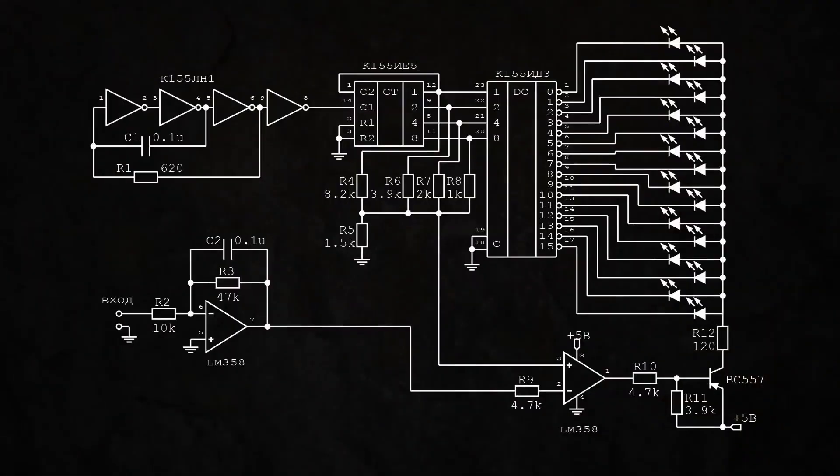To adjust the input voltage to the required levels, we will use the second operational amplifier, which we still have in the LM358 package, and assemble an inverting amplifier circuit on it. I also decided to add a small capacitance for slight integration.